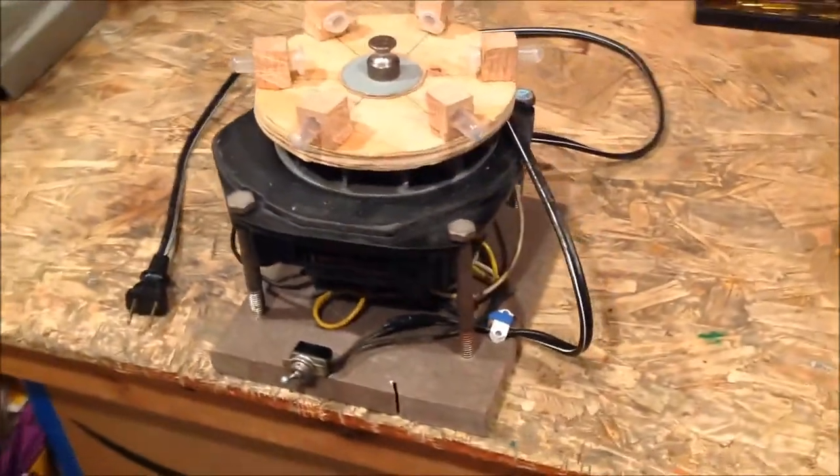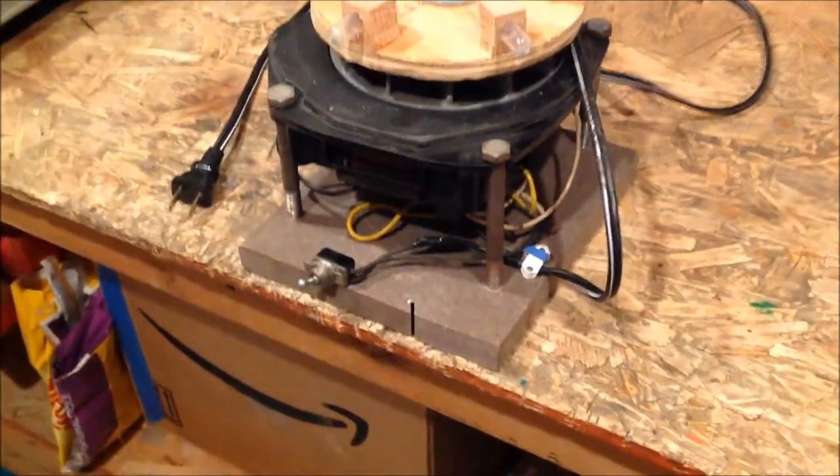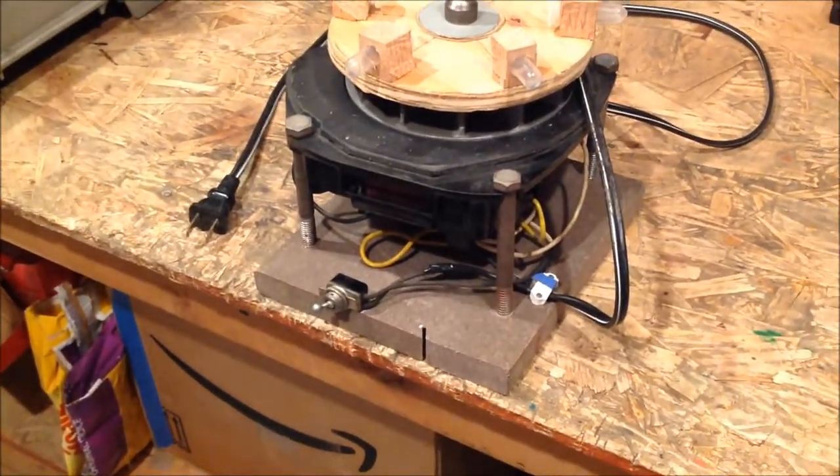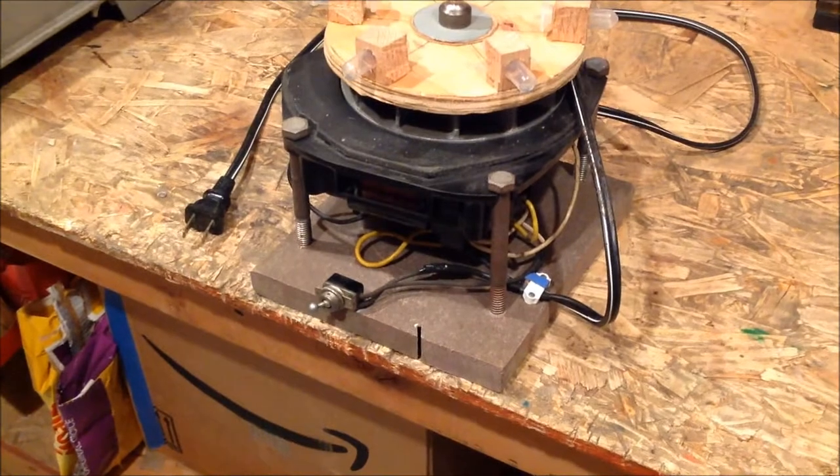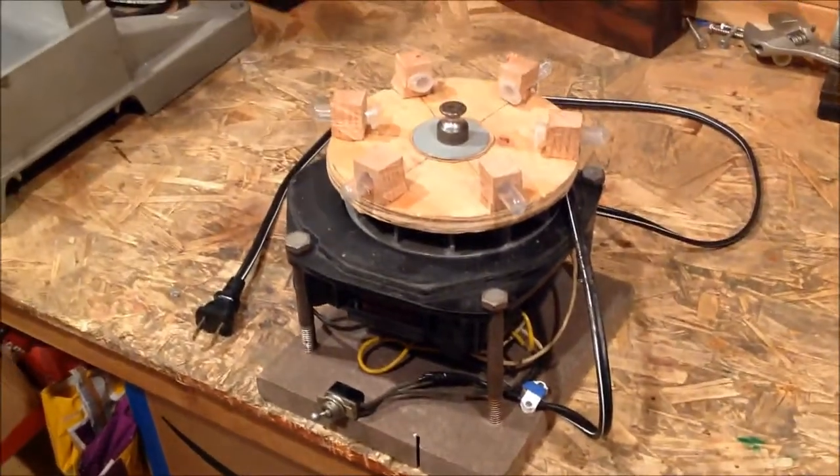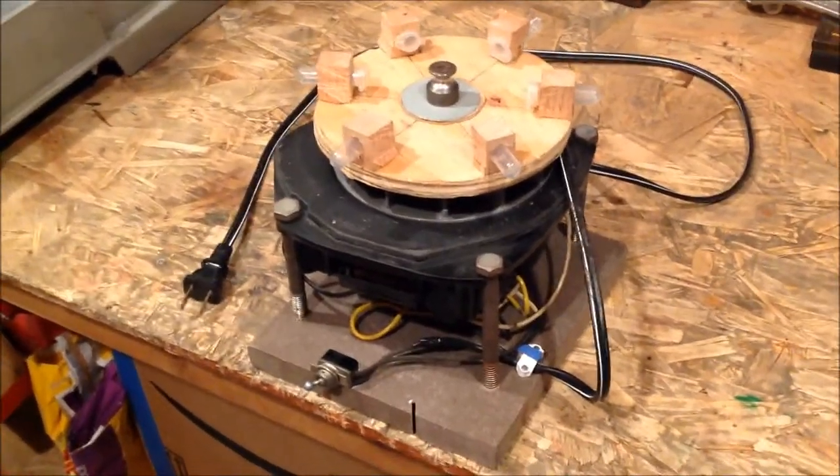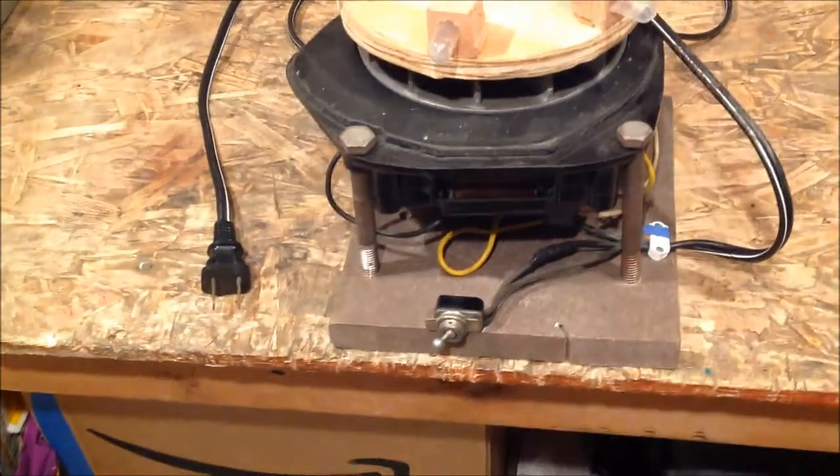I bolted it to this plastic wood block using some large bolts, and then I clamped the block to the table in operation so that nothing can jitter loose or fly away. I used the on-off switch from the vacuum cleaner as well as the cord.